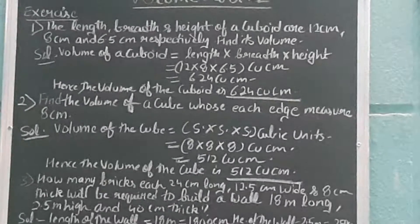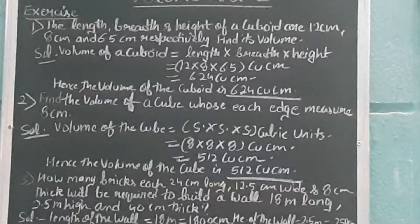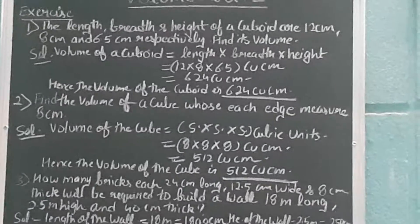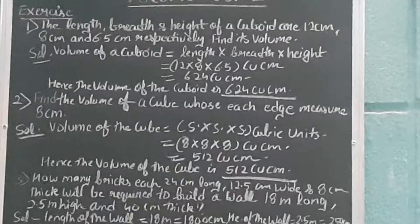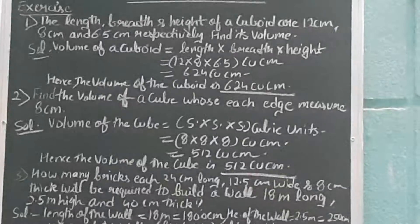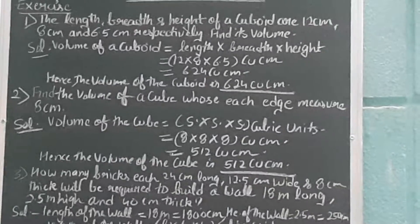So what is the formula for finding it out? Volume of the cube is equal to side times side times side cubic units. So each side is equal, so 8 × 8 × 8, and when we multiply this we'll get 512 cubic centimeters. Hence the volume of the cube is 512 cubic centimeters.